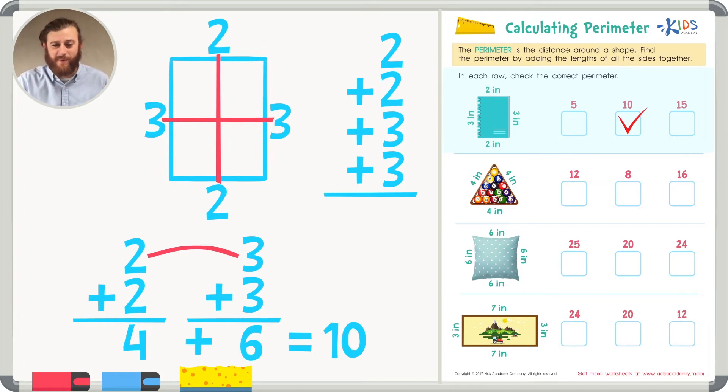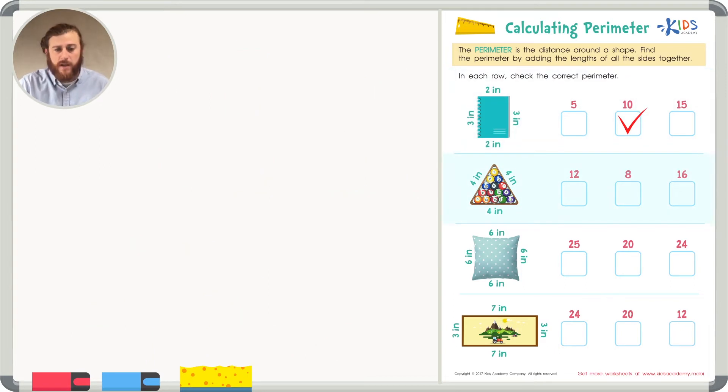Let's take a look at the next example. In this problem, we have a triangle with three sides. Each side has a length of four inches. So, again, even though there's only three sides, I want to make an easy problem first. The first thing I'm going to do is just add these two fours.